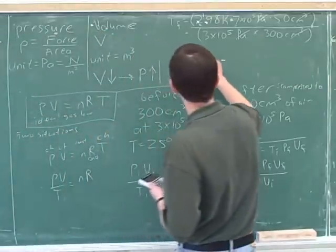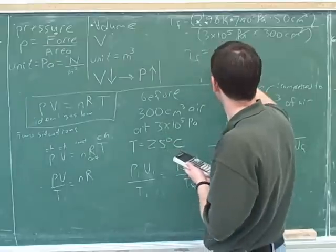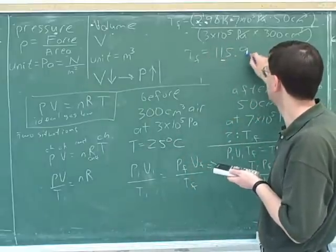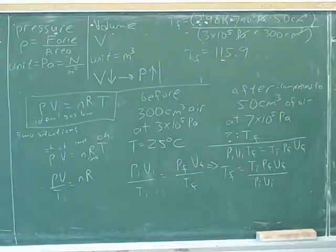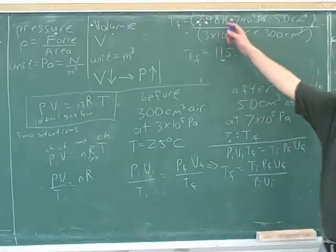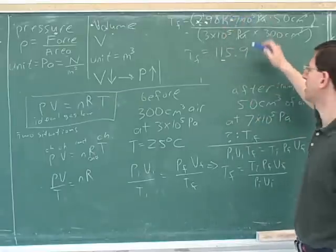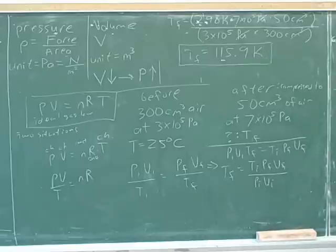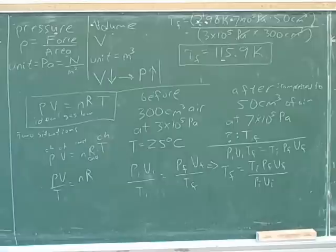So what was our answer? 115.89 Kelvin. Let's just call that 115.9. Okay. What units do we have? Kelvin. Because that's the only unit left standing here, right? All the other units got cancelled. Okay. So that would be our final temperature here. All right. So that's some good progress here.